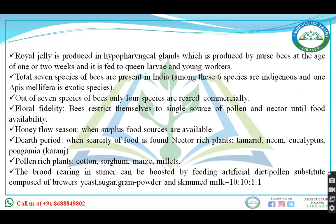Next is floral fidelity — when bees restrict themselves to a single source of pollen and nectar to fulfill their food availability, that is floral fidelity. Honey flow season is when surplus food is available. Dearth is when there is scarcity of nectar from plants.